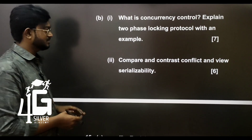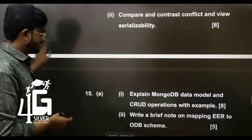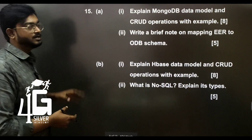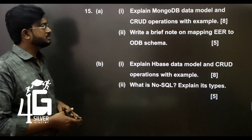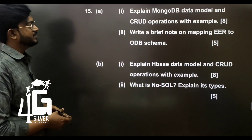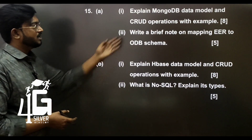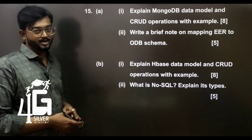Explain two-phase locking protocol with an example. Compare and contrast conflict and view serializability. Next, Unit 5 important Part B question: Explain MongoDB data model and CRUD operations.